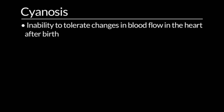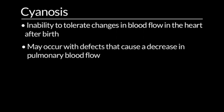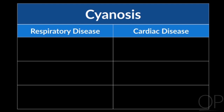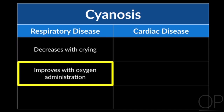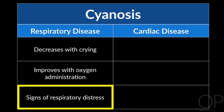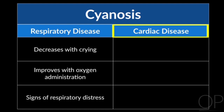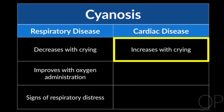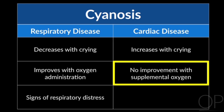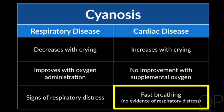Cyanosis occurs when neonates are unable to tolerate the changes in blood flow within the heart after birth, and may also occur in infants with congenital heart defects that cause a decrease in blood flow to the lungs. When cyanosis occurs with respiratory disease, it usually decreases with crying, improves with oxygen administration, and there are usually signs of respiratory distress. When cyanosis occurs with cardiac disease, it usually increases with crying because oxygen demand increases but the body cannot deliver sufficient oxygen, does not improve significantly with supplemental oxygen, and infants breathe fast without evidence of respiratory distress.